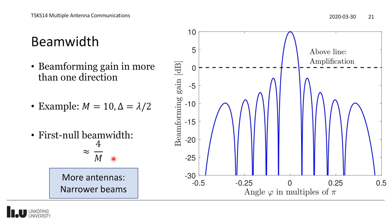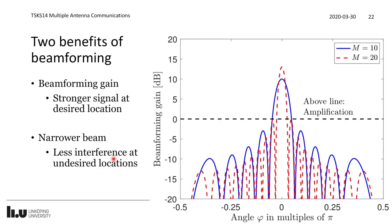Comparing 10 antennas (blue) versus 20 antennas (red): doubling the antennas increases the peak beamforming gain by 3 dB and approximately halves the beamwidth, producing more side lobes. The two main benefits of beamforming are: (1) a strong signal at the desired location and nearby angles, and (2) a narrower beam that reduces interference leaking into other directions, which is beneficial when communicating with multiple users simultaneously.